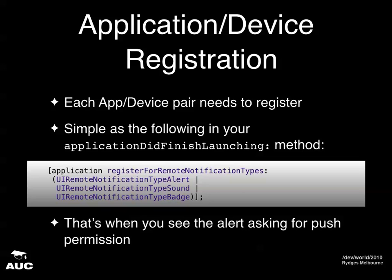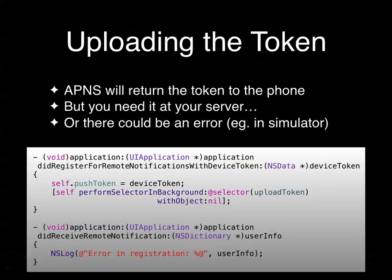If push hasn't already been set up, that's when the user sees the alert asking whether to allow push notifications. Even if they've accepted or denied it before, you can still safely call this method — it won't pop up the alert again, but it will do the round trip with Apple and your server, which is good because if you've lost a token it'll be refreshed.